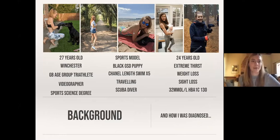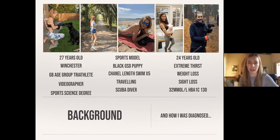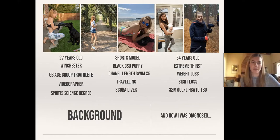As Ramzi said, my name is Elise. I am a type 1 diabetic and I have been a triathlete for the last six years. I've tried to put minimal words on the slides and as many pictures as possible. I live in Winchester with my partner and our puppy. I have a sports science degree — my background has been sport, sport, sport. I graduated from Birmingham about four or five years ago, and I have a videography business, filming weddings, events, businesses. I've also been a sports model and I have a black German shepherd puppy who is the love of my life.